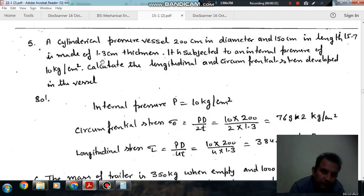The thickness of the vessel is 1.3 cm and diameter is 200 cm. The thickness to diameter ratio is less than 1 by 10, so it can be assumed as a thin pressure vessel.